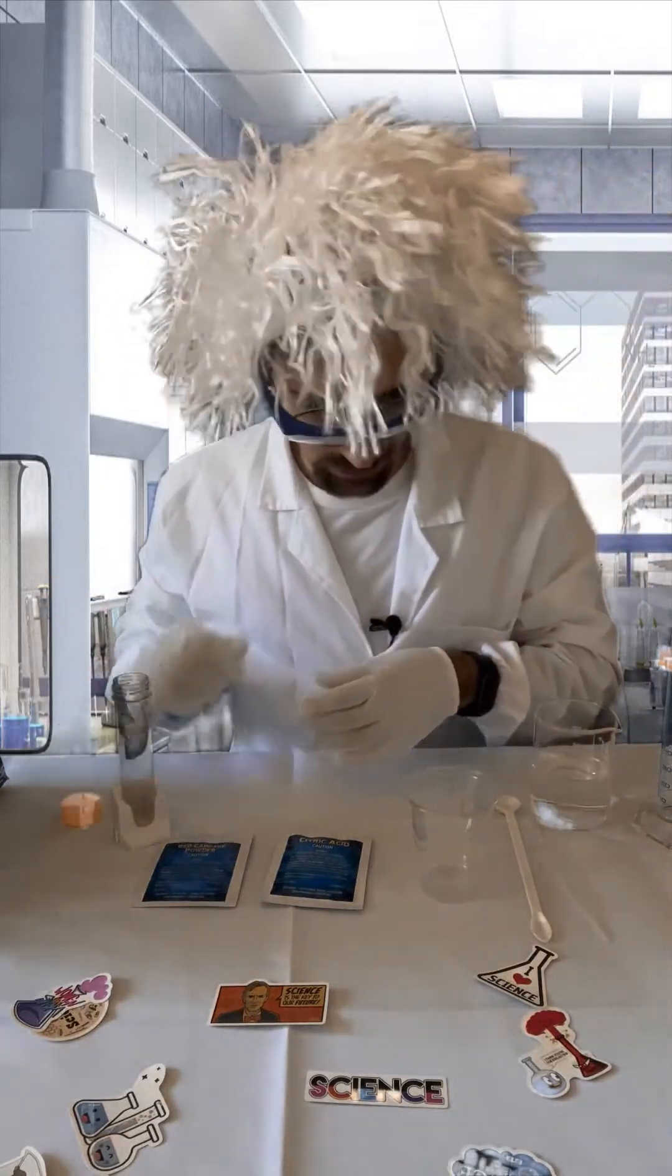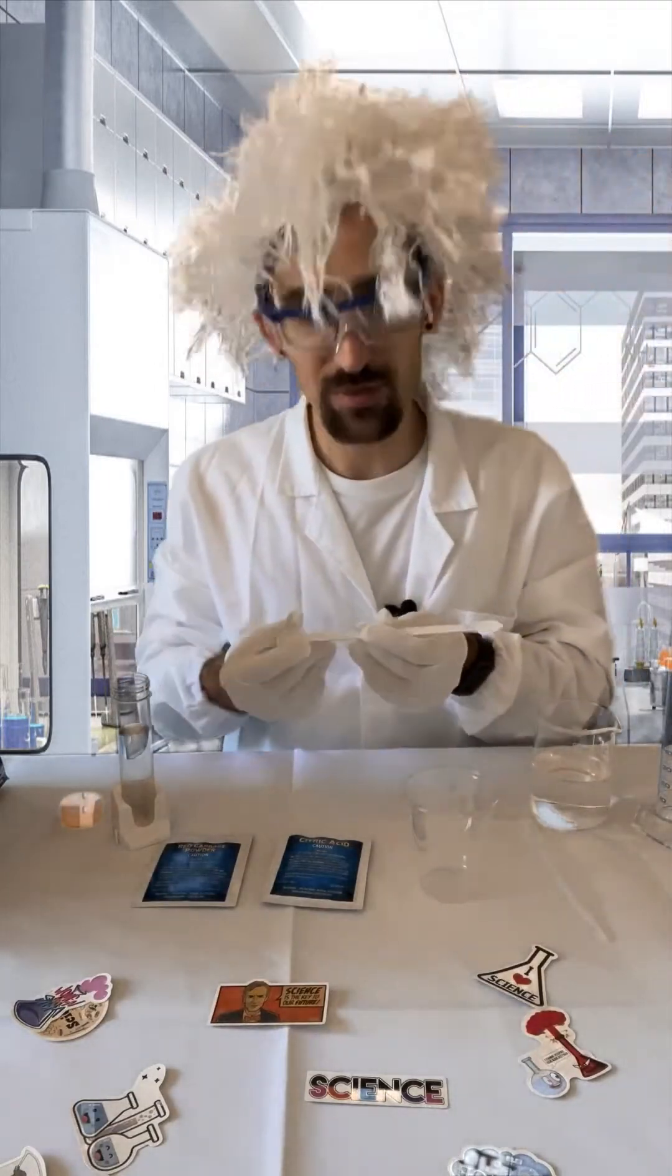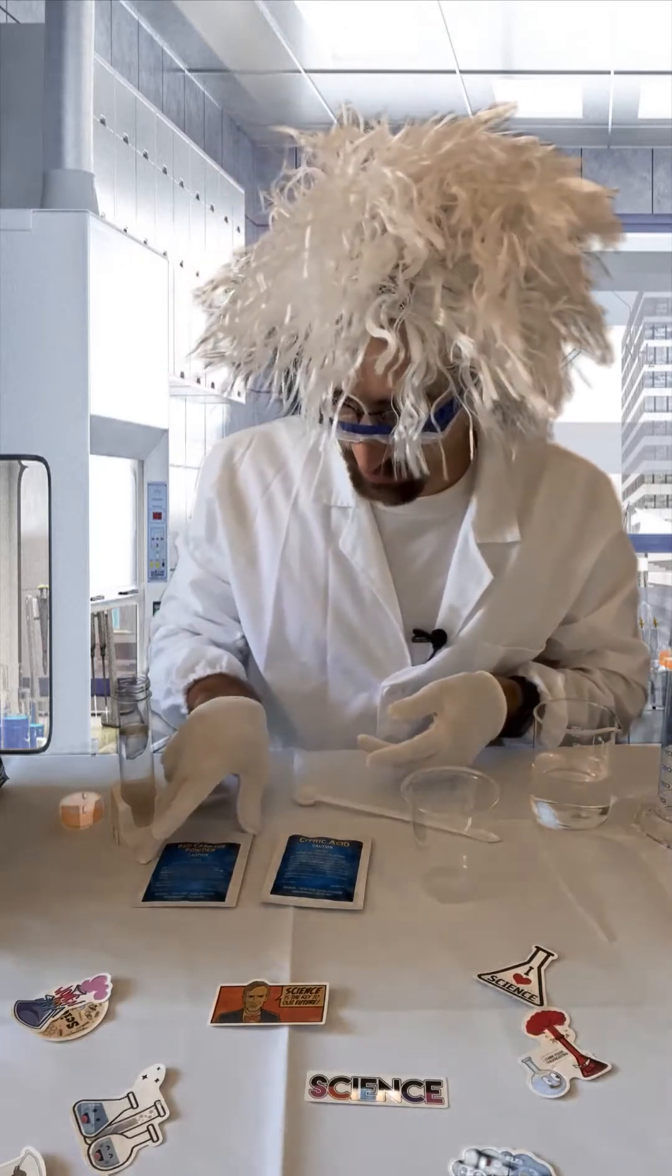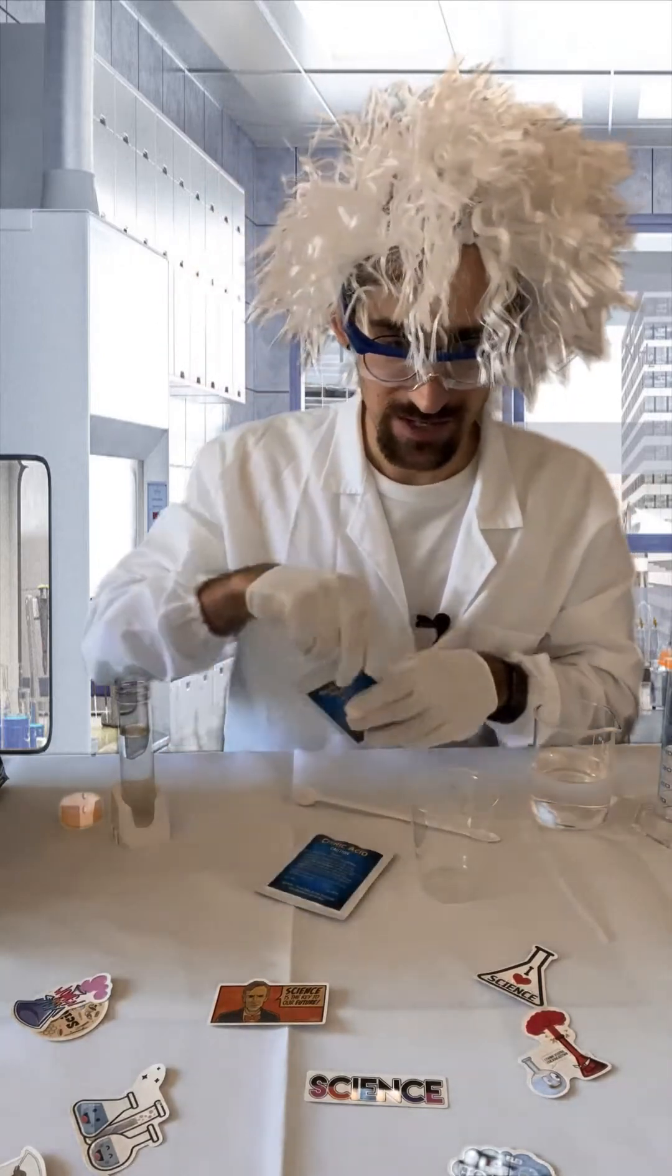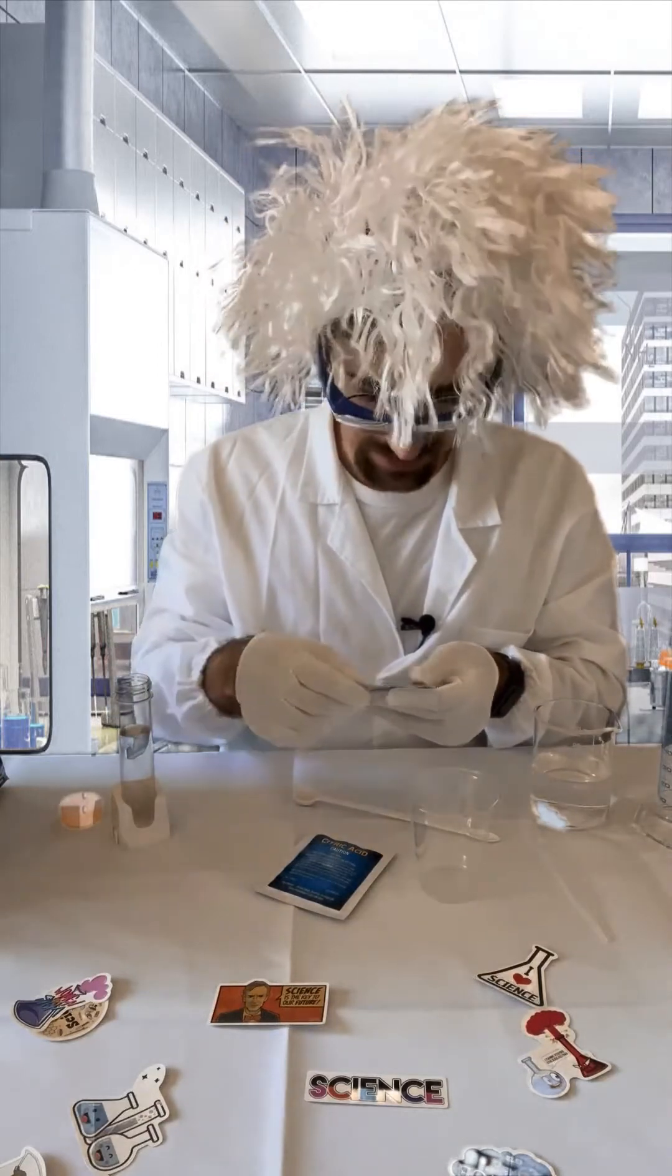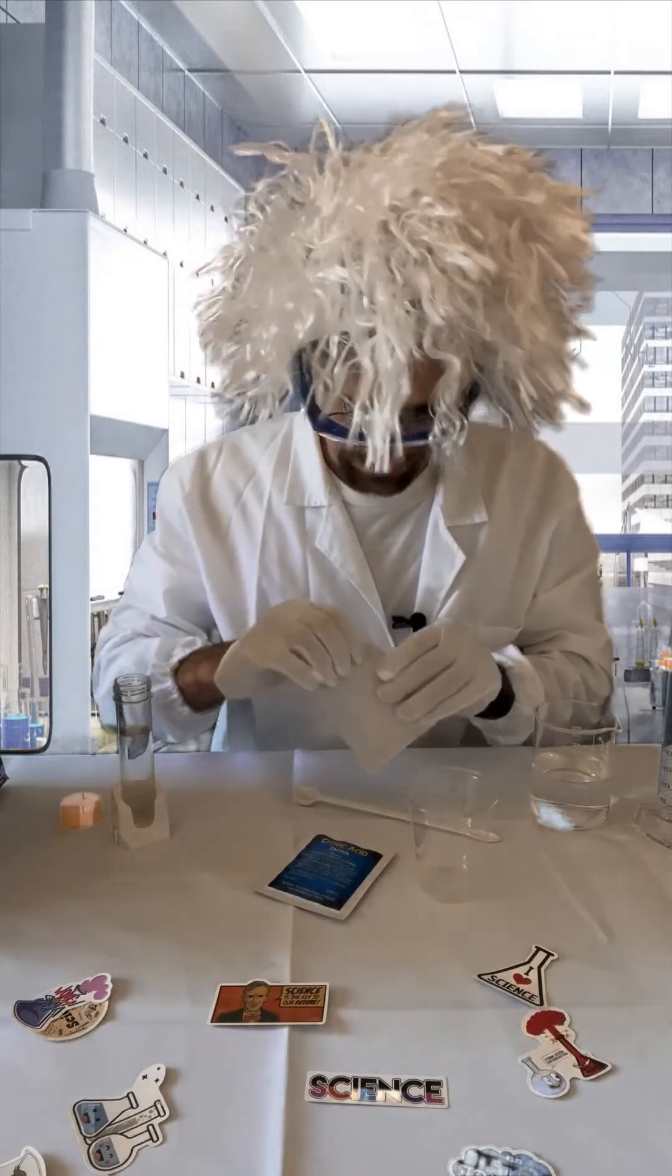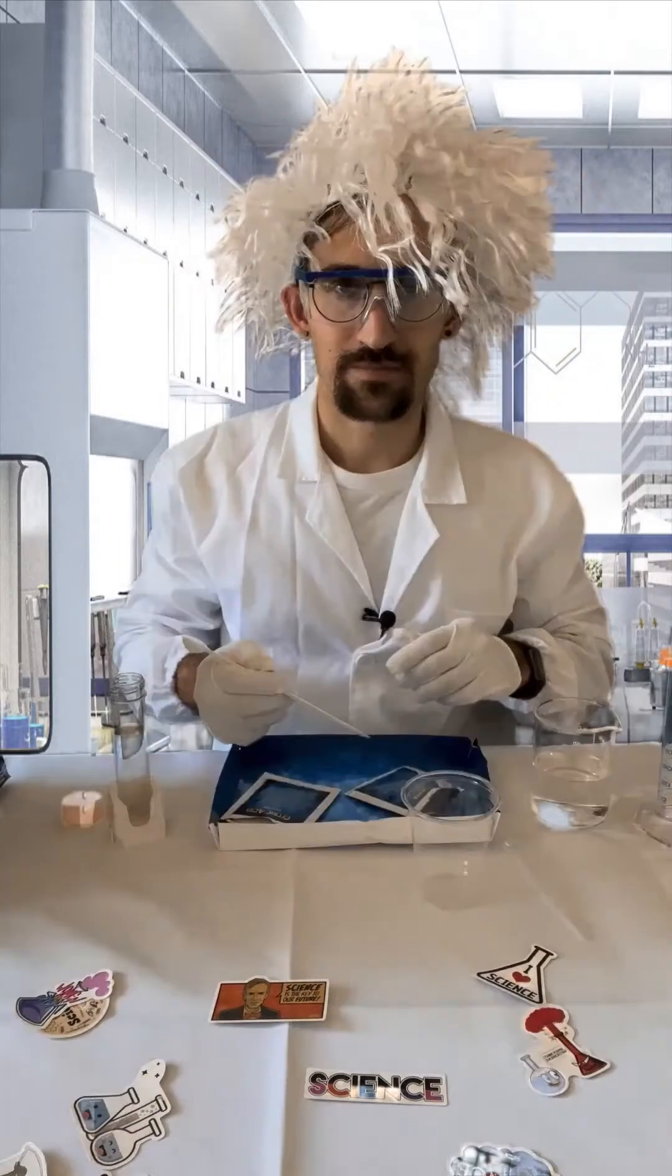Then we're going to be adding one small scoop using that scooping spoon you've been given, and that's going to be of the red cabbage powder. Now this powder can stain, so keep it away from clothes, keep those gloves on, and we're going to add that powder to our mixture.